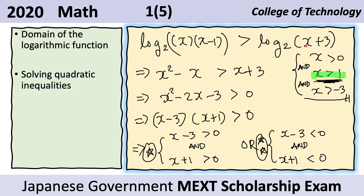Of these three constraints, x greater than one is the most restrictive and is satisfied by all of them. We must choose this constraint for the entire inequality to be valid. For example, if we chose x greater than negative three, values between negative three and zero would not satisfy the other constraints. So among the three, only x greater than one satisfies all constraints, and that is what we highlight.